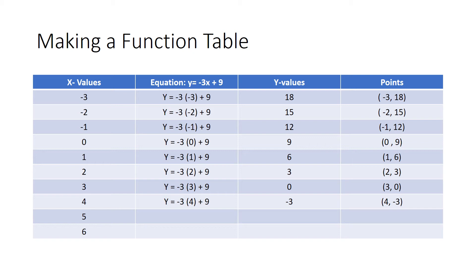In the ninth row I have an x value of five. I plug it into the equation: negative three times five plus nine. I type that in the calculator and get an answer of negative six. I take my x value five and my y value negative six and write it in the points column as five, negative six.